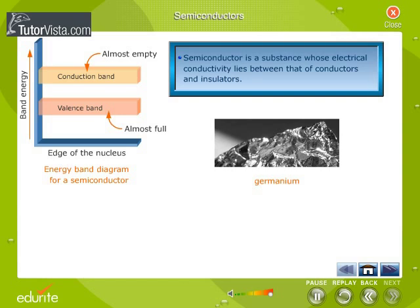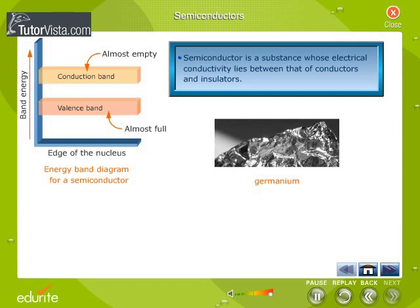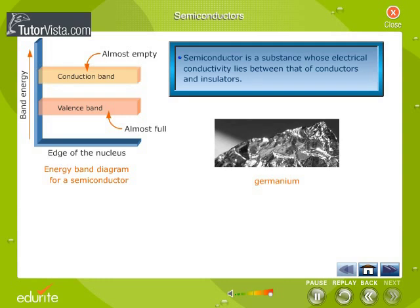Semiconductor is a substance whose electrical conductivity lies between that of conductors and insulators. According to the energy band theory, the valence band is almost filled and the conduction band is almost empty. But the energy gap between valence and conduction bands is very small, as shown in the figure. Therefore, a small potential is enough to push the electrons from the valence band to the conduction band.